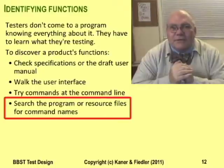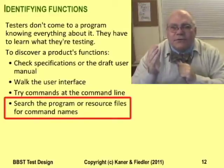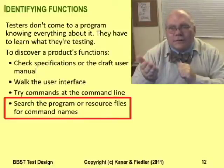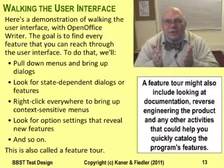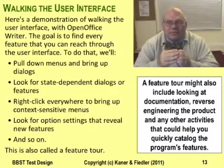Another way to find commands is to reverse engineer the source code files. For example, a very simple example — you can often find a text file with error messages. These will point you to features that you might not have noticed if you were just walking the user interface. It's time to demonstrate a walk through the user interface. This slide briefly summarizes what you'll see. Function testing involves two broad types of tasks: first, you have to find all the functions you can test, and then you have to come up with tests for each one. What I'm demonstrating here is the task of finding all the functions that you're going to have to test.